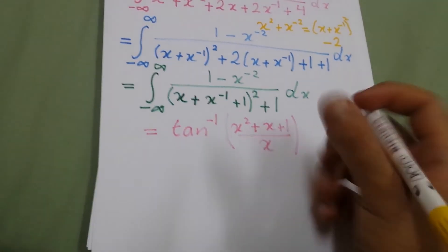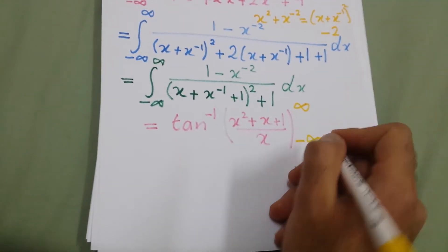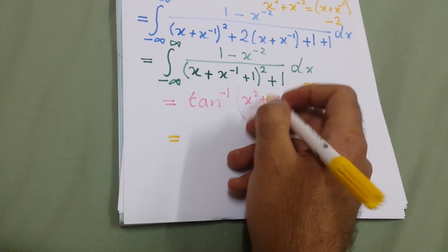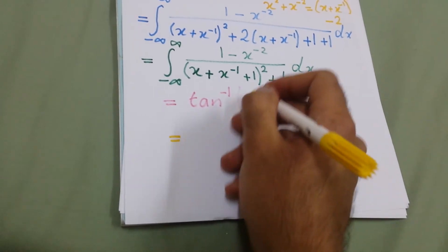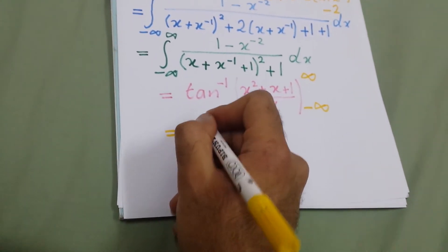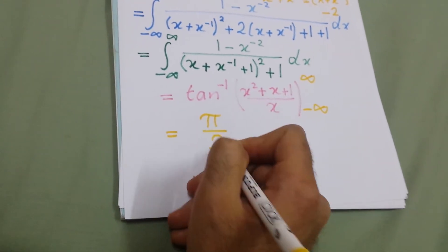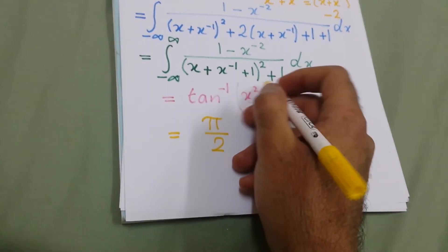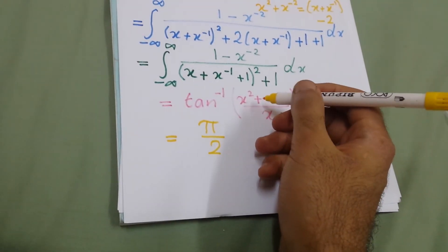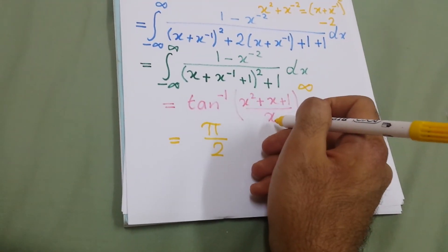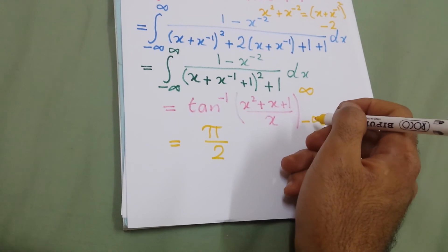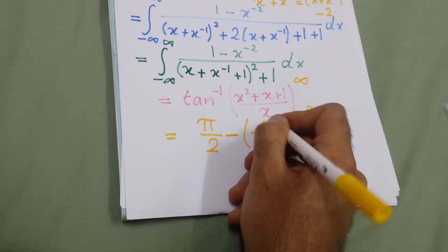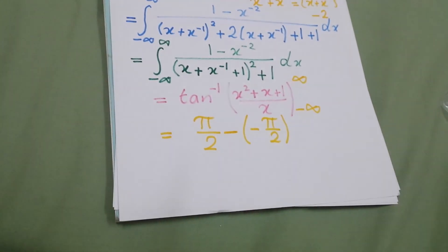Now we substitute infinity and minus infinity. If we substitute infinity, the degree of the numerator is bigger than the denominator, so it will give tan inverse of infinity, which equals pi over 2. If we substitute minus infinity, using L'Hôpital's rule the derivative gives 2x over 1, so substituting minus infinity gives tan inverse of minus infinity, which is minus pi over 2.